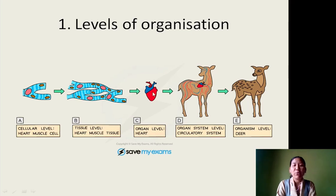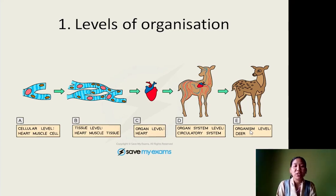A number of organs — like the heart and blood vessels — all together form a circulatory system, so at this level it is the organ system level. A number of organ systems work together in an organism. These are the different levels of cellular organization: at the lowest we have the cellular level, then tissue level, organ level, organ system level, and then organism. In the animal kingdom, different organisms will have a different level of cellular organization.